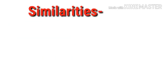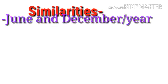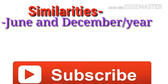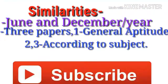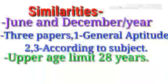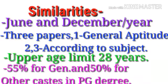First, we will discuss about similarities. Exams are conducted in June and December per year. There are three papers — first paper is General Aptitude, and second and third papers are according to subject. Upper age limit is 28 years. Eligibility is same: not less than 55% for general and 50% for other categories in postgraduate degree.